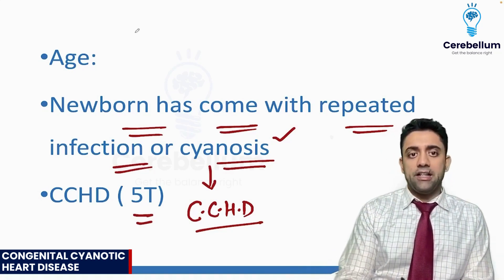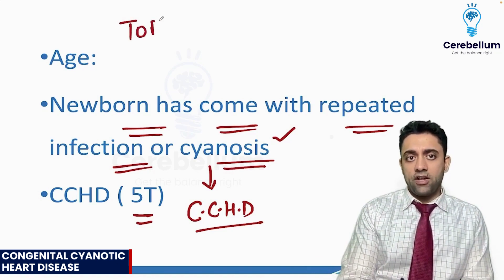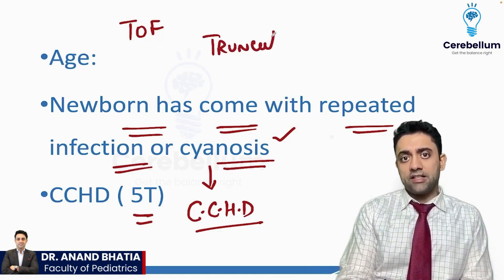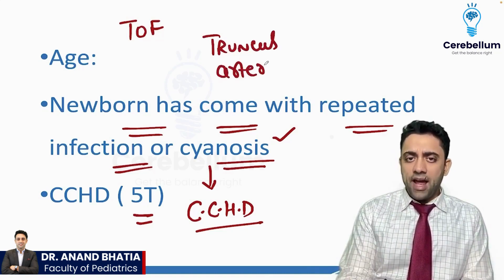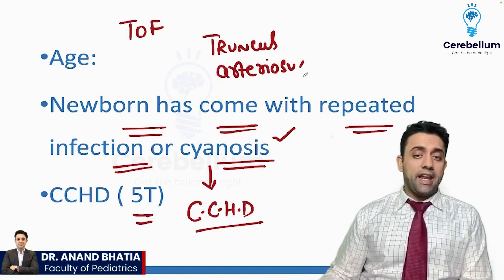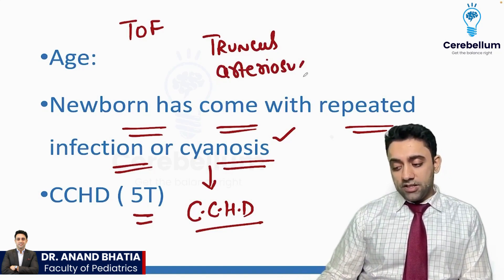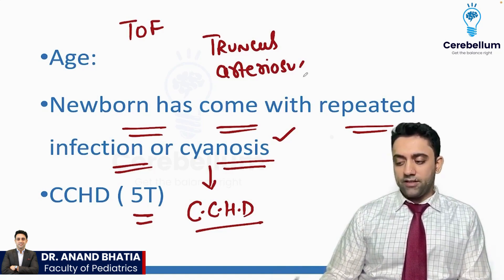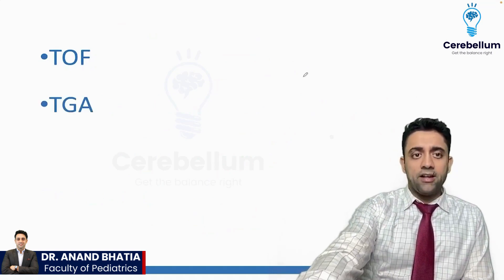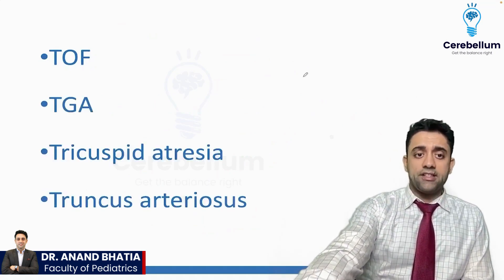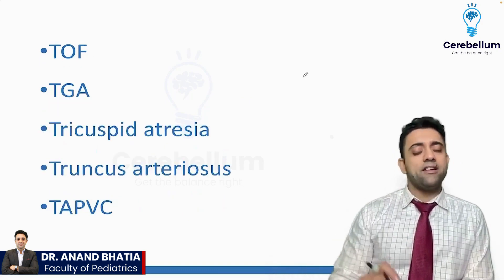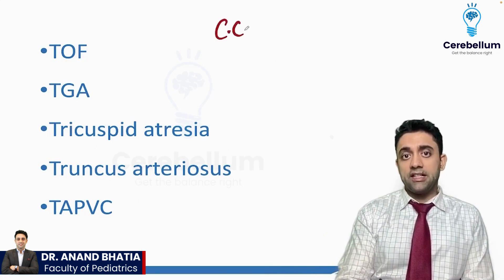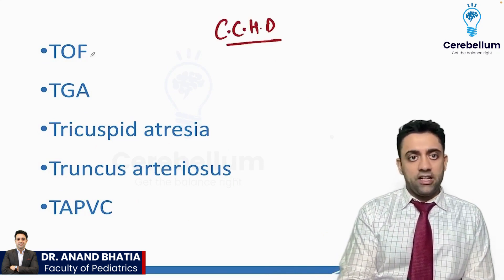The 5 T's are: T for Tetralogy of Fallot, T for Truncus Arteriosus. If I ask you to name five congenital cyanotic heart diseases, the answer will be: number one, Tetralogy of Fallot; TGA; Tricuspid Atresia; Truncus Arteriosus; and TAPVC. These five T's you must know.